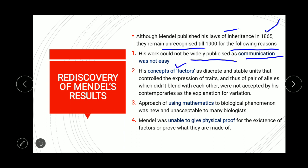The second reason was his concept of factors — that traits are controlled by discrete and stable units which do not blend with each other. Their effects are separate, so for tall and short height there would be no intermediate height. This concept was new, and his contemporaries belonging to the same time period did not accept the theory or the explanation for variation.